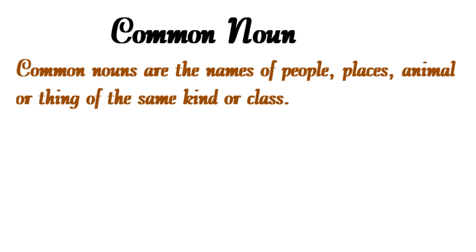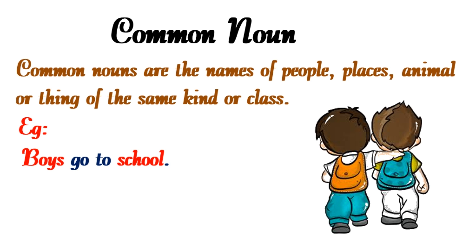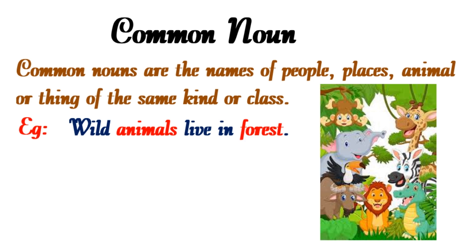Common nouns are the names for people, places, animals, or things of the same kind or class. For example, 'Boys go to school' — here 'boys' can refer to any boy; it does not belong to a specific boy. Similarly, 'school' is the name given to any institution where children study. 'Wild animals live in forest' — here 'animal' does not specify which animal, and 'forest' can be any jungle.